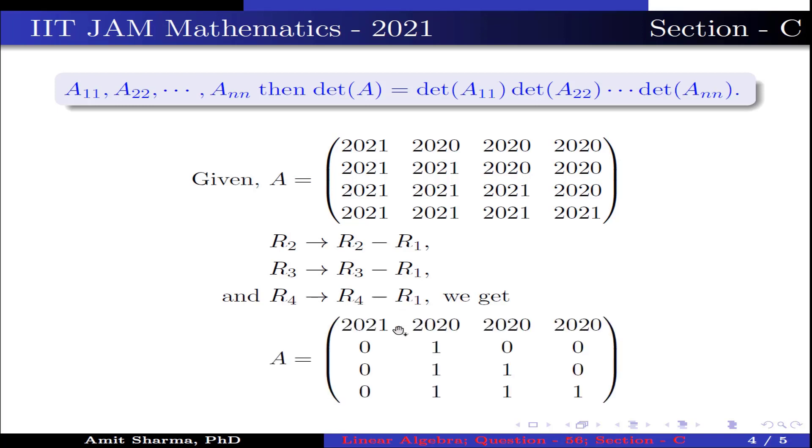a 4 by 4 matrix having elements 2021, 2020, 2020, 2020 in the first row, and 0, 1, 0, 0 in the second row, 0, 0, 1, 1, 0 in the third row, and 0, 1, 1, 1 in the fourth row.